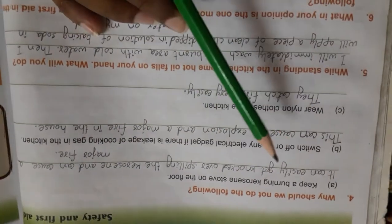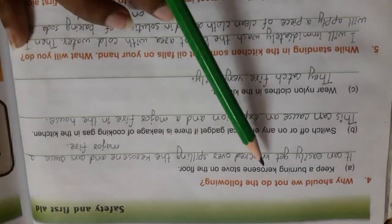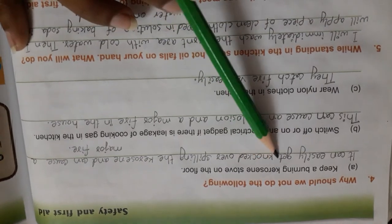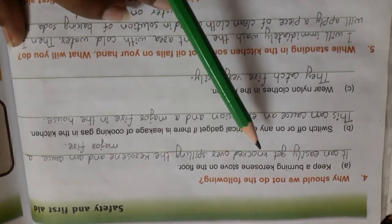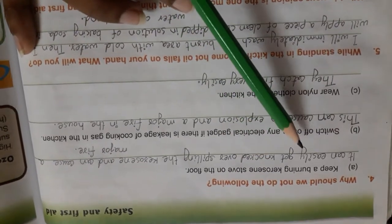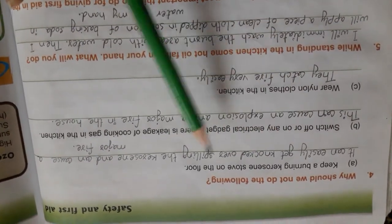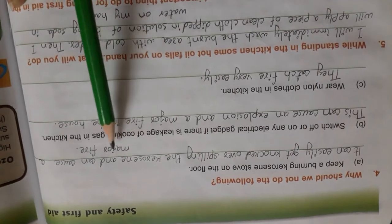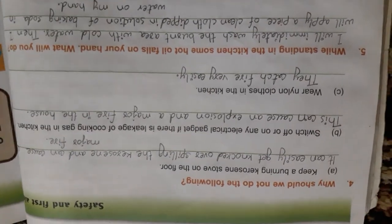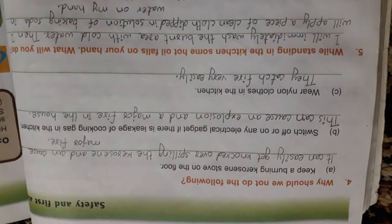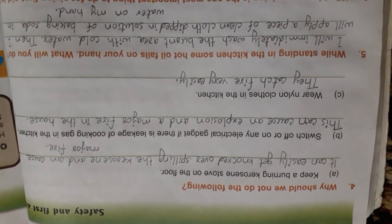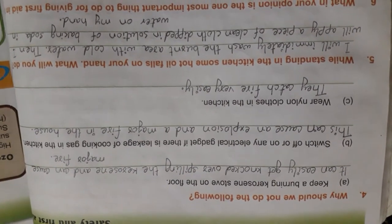Question number 4 is why should we not do the following. First, keep a burning kerosene stove on the floor. Why should we not keep the burning kerosene stove on the floor? Because it can easily get knocked over spilling the kerosene and it can cause a major fire.